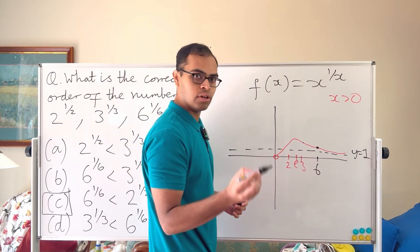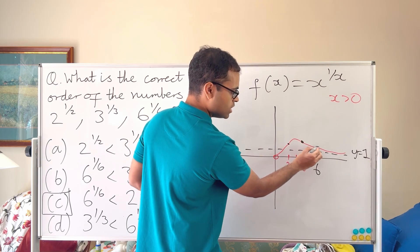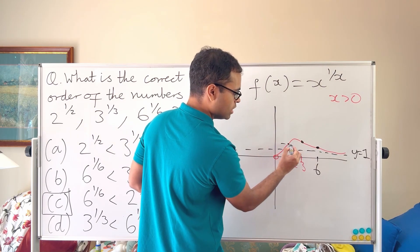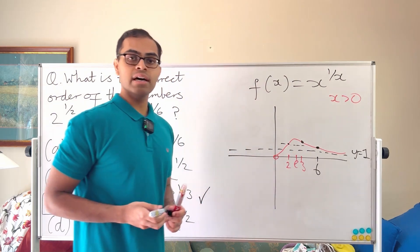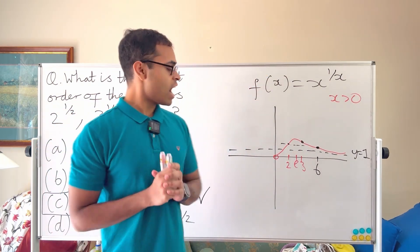So what happens is three still is not too far below the max whereas two is a bit more, so you get the correct order of these values. Six is going to be all the way down here, it's going to be really low, and that's going to be the explanation. And this is our function.